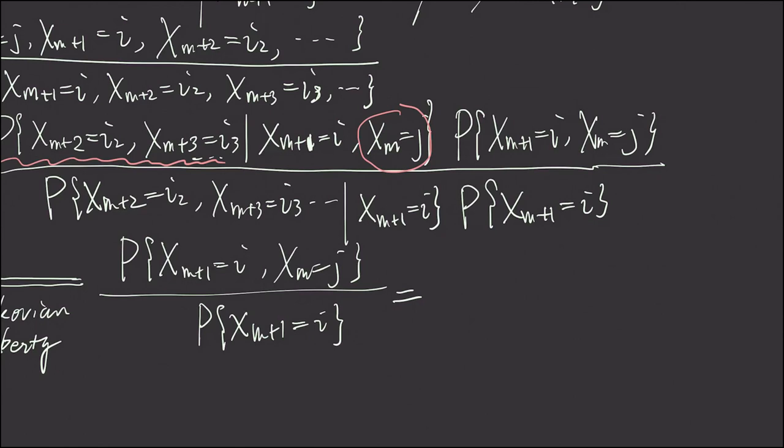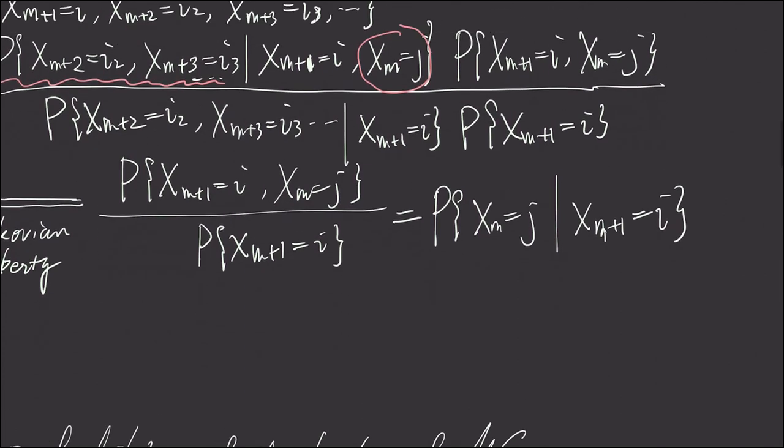This becomes X sub M being j, given X sub M plus 1 is i. And now we have proved the formula.